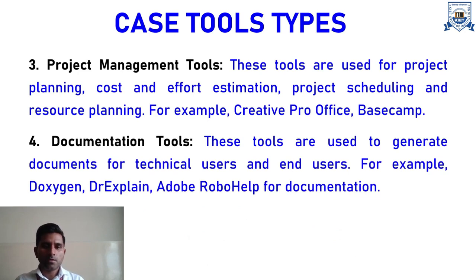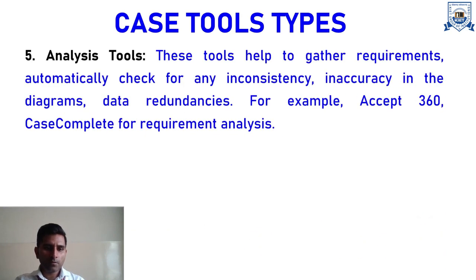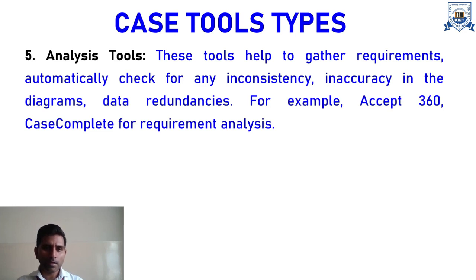The fourth type is documentation tools. These tools are used to generate documents for technical users and end users. A wide variety of tools used in this category are DOXYGEN, DRXPLANE, ADOPT, and ROBOHELP. The fifth type is analysis tools. These tools help gather requirements automatically and check for any inconsistency or inaccuracy in the diagrams. For analysis tools, popular categories include ACCEPT 360 and CASE Complete for requirement analysis. From a requirement analysis point of view, these tools help identify gaps in requirements collected from the client.